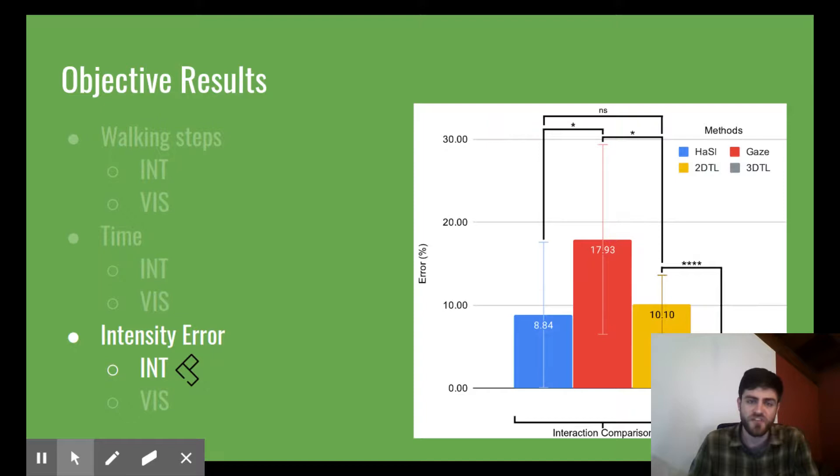Regarding the intensity error read by the users, the hand slider offered the most correct readings, whereas the 3D full field overcame the 2D vis in the same aspect.